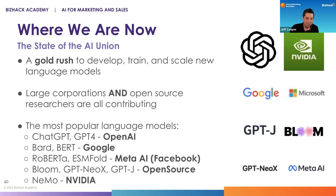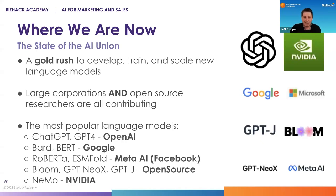As these machines have developed, they've started being able to do things like write code, perform 40-digit arithmetic, and other things we wouldn't expect from a language model — features that are now emerging. This is also what makes them dangerous. So where are we right now? It's a gold rush. Every company in the world is desperately trying to produce their own language models. Google has them, Microsoft has them, Meta has them, OpenAI, NVIDIA — there are a bunch of different tools. As a business owner looking at how you can use these tools, you will find thousands of different options. Part of why we put this course together is to help business owners navigate those options. Over the next five years, there will be continued struggle between large corporations, smaller companies like OpenAI, and open source communities all fighting to get in on this technology.